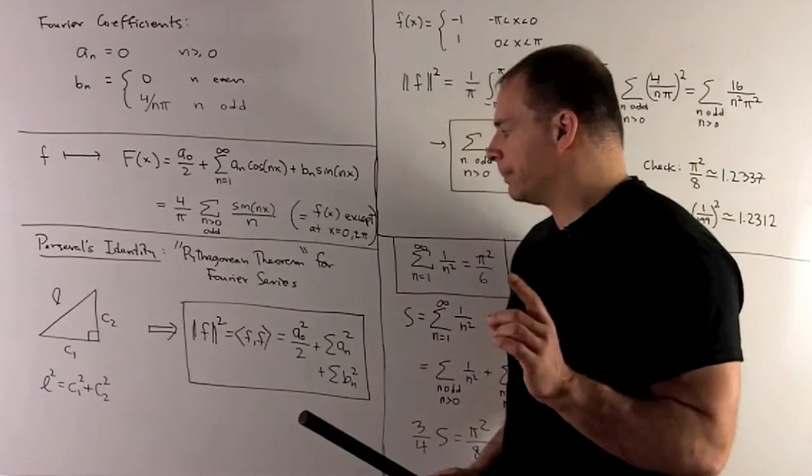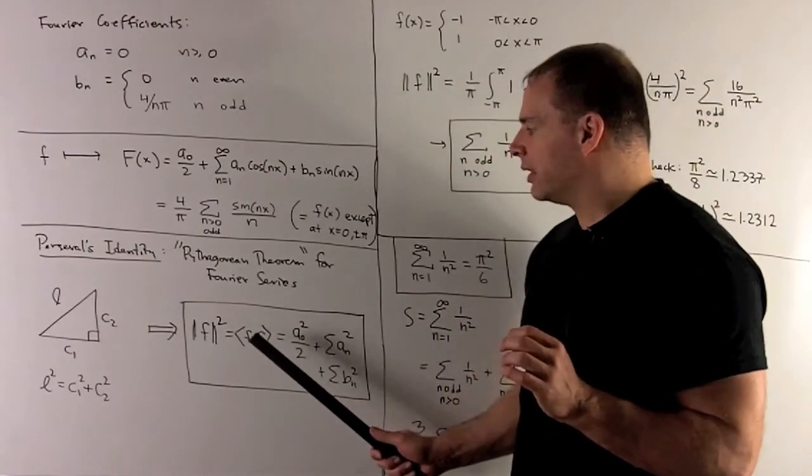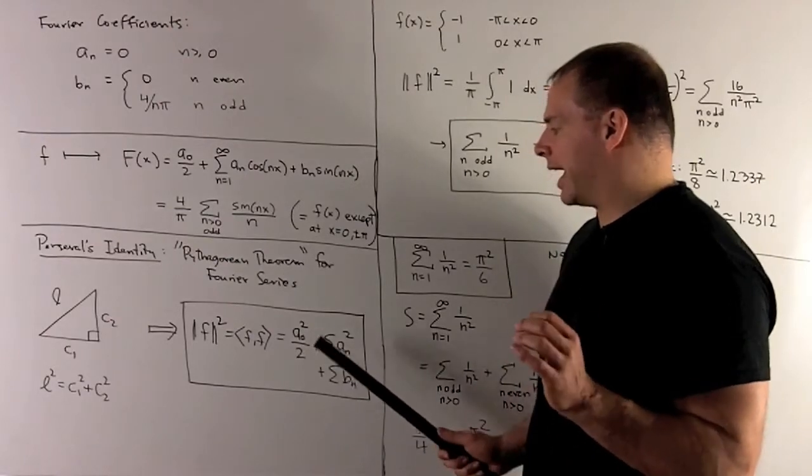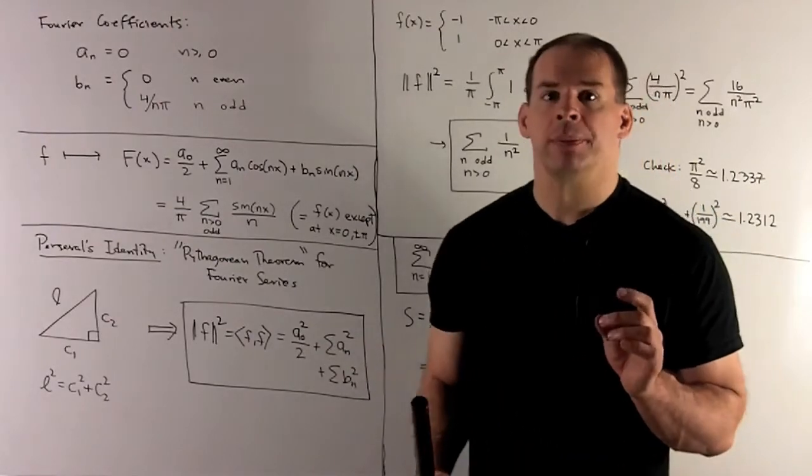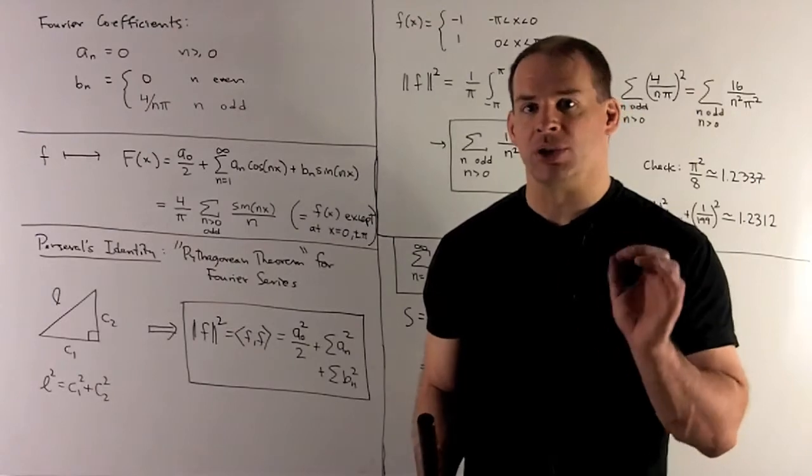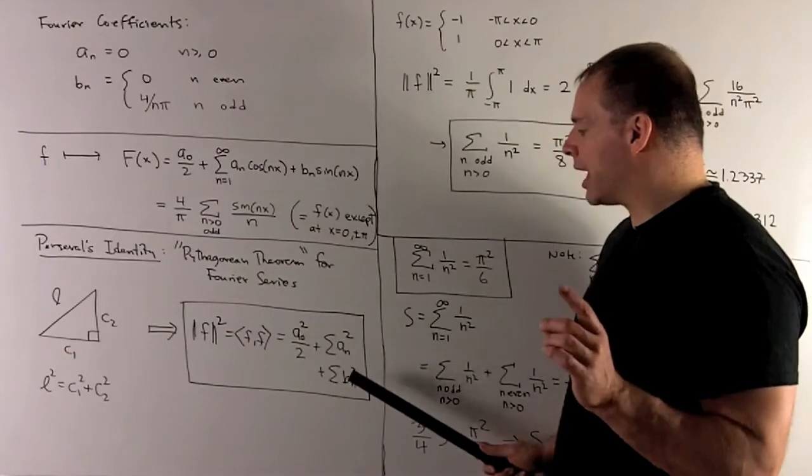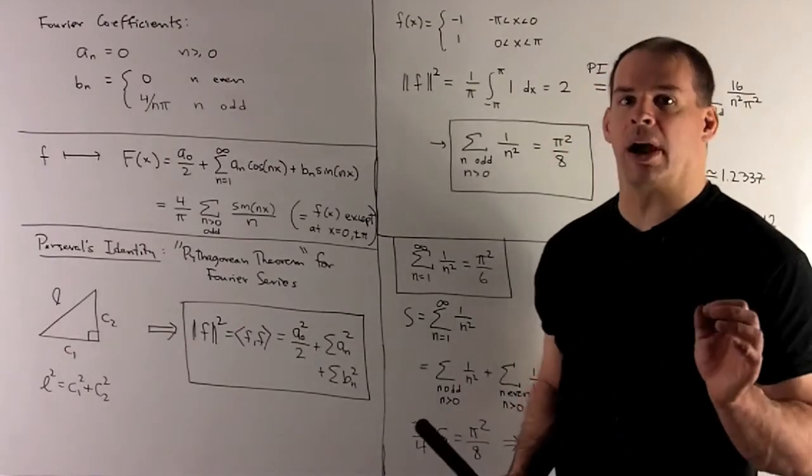Now, our function is going to be the stand-in for the hypotenuse. What comes out is, we take the inner product of f against itself, so that will be the length squared. That's going to be equal to, we have a0 squared over 2. Again, that's a correction because we're not using a unit vector. And then we'll have the sum of a sub n squareds plus the sum of the b sub n squareds.